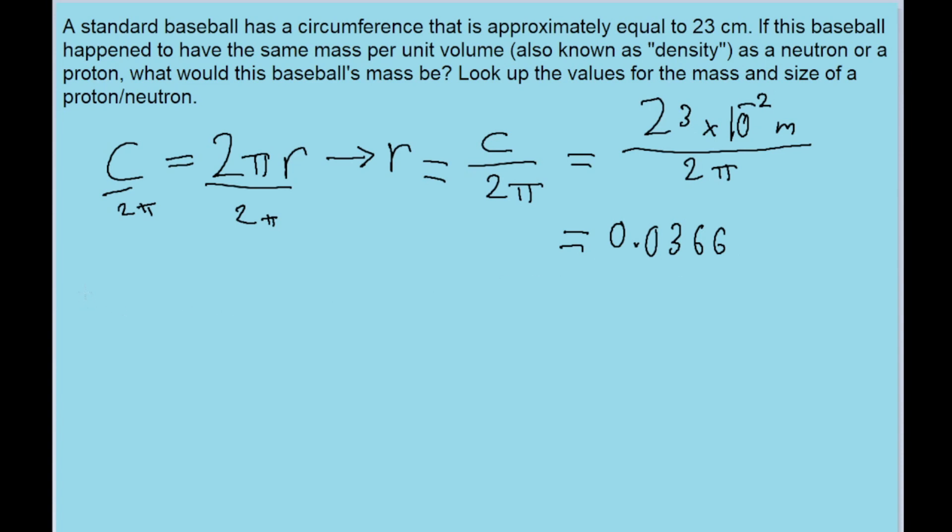And now to find the volume of the baseball using the radius, the volume of the sphere is equal to 4 thirds times π times the radius cubed. So now that we have the radius in meters, we can plug this into our formula for the volume using 4 thirds and π. And we find that the volume of this sphere is equal to about 0.000205 meters cubed.